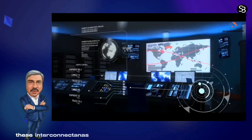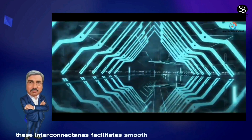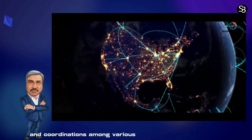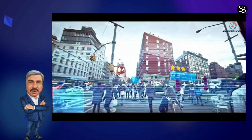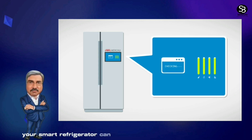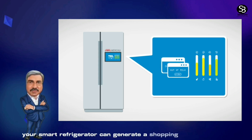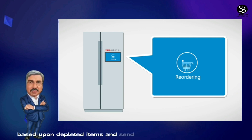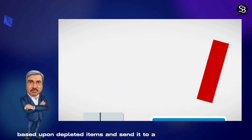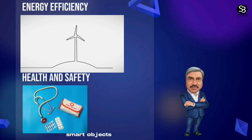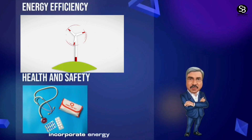Integration: Smart objects can seamlessly integrate with other devices and platforms. This interconnectedness facilitates smooth communication and coordination among various smart devices. As an illustration, your smart refrigerator can generate a shopping list based on depleted items and send it to your smartphone.